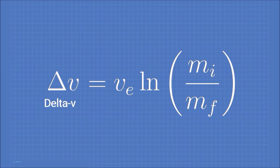But what does it mean? Let's figure out what each variable stands for. On this side of the equation is delta V.